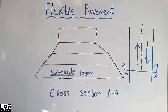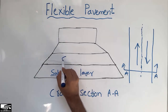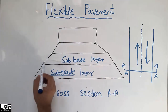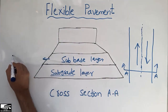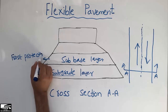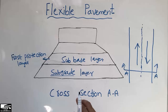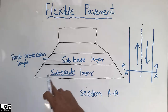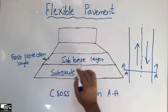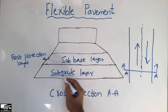The second layer, above the subgrade, is the subbase layer. This layer is also known as the frost protection layer, because it is used to protect the pavement from frost deformation when temperatures drop. That is why we always try to provide a subbase layer. It also helps in load distribution to the subgrade layer.